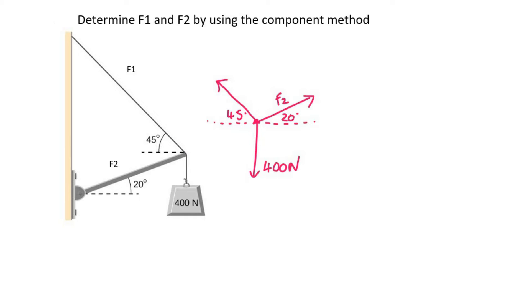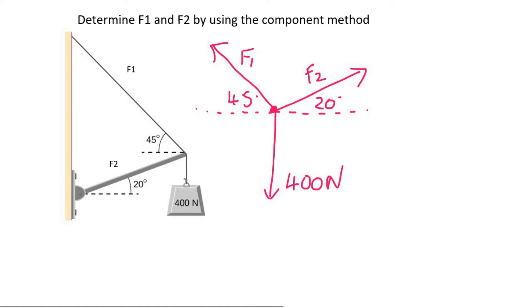Now we're going to use the component method, which is where you need to get every single force into its horizontal and its vertical, and we do that by making simple little triangles like this. We call it x and y, and then of course we're going to do the same for this one, and that'll be its x and its y. And then for the 400, we don't have to do anything because it is only a vertical force.